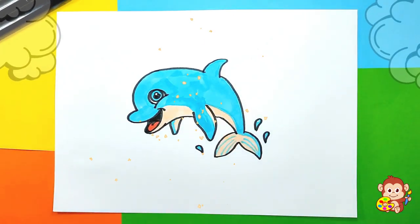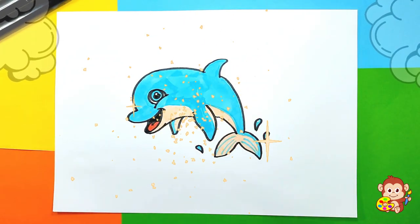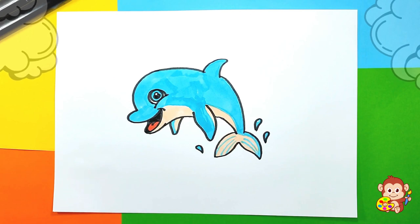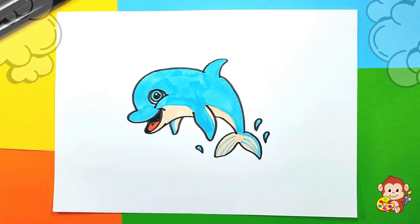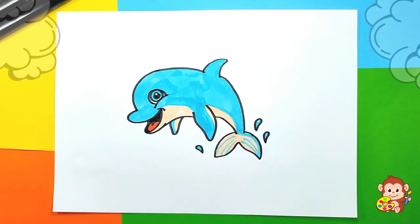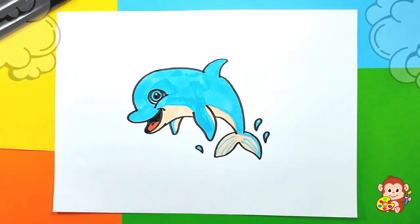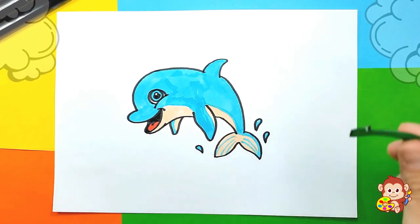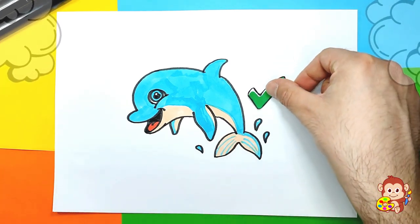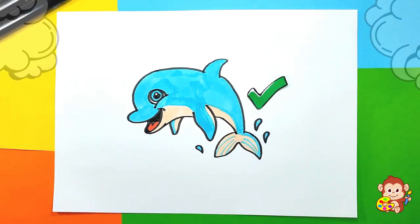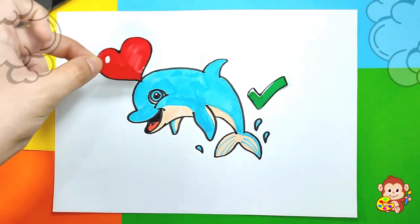Cool, guys, we have our cute little dolphin and he's looking really, really cute. I love how he looks. Well done, well done. We have finished this lesson, so we can give our little dolphin a check mark. And we can give him a little heart, which we can put maybe on his head, or maybe he can hold it in his mouth.